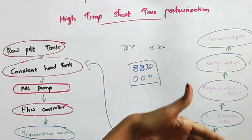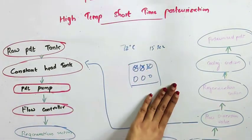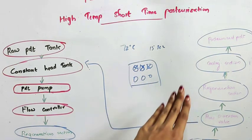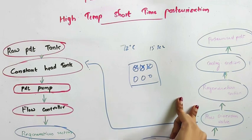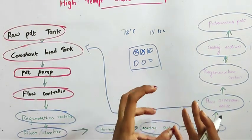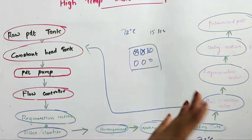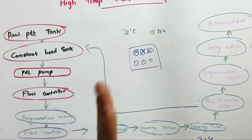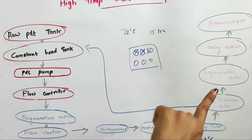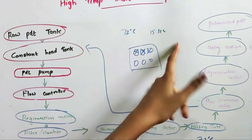The next section is the regeneration section, where the milk is cooled. The milk that passes the flow diversion valve will be at 72 degrees Celsius, and it is not possible to package milk at this high temperature, so we have to cool it. This cooling is performed in the regeneration section. To cool this hot milk, we keep it in contact with cold milk — specifically the cold milk that is to be pasteurized in the next batch.